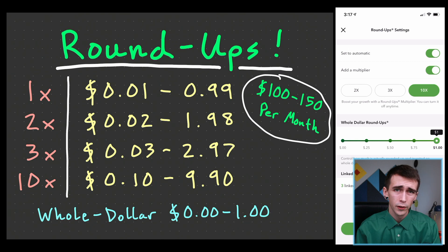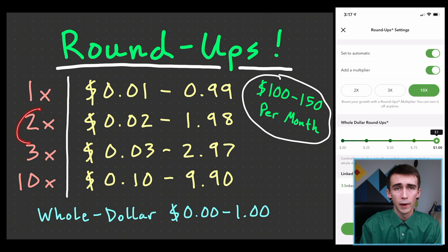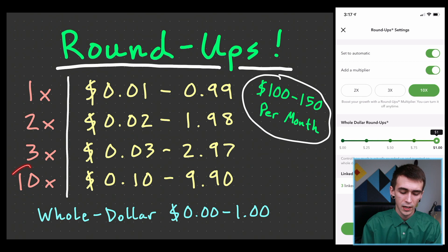For example, if you bought something for $4.55, rounding up to the nearest dollar adds 45 cents, and that 45 cents gets multiplied by your chosen setting — two, three, or ten times. This can add up very quickly. Personally I've always had mine set to the three times amount; I feel like ten times is a little steep for me.